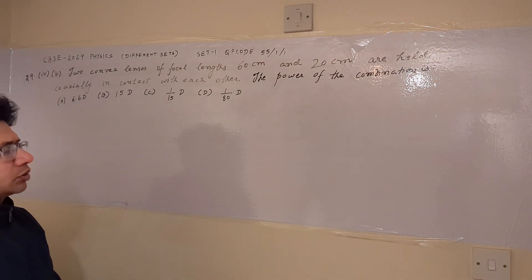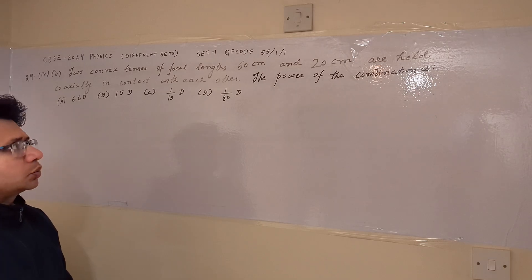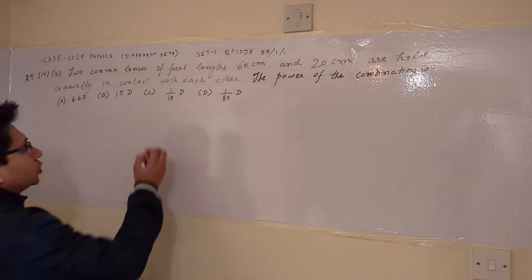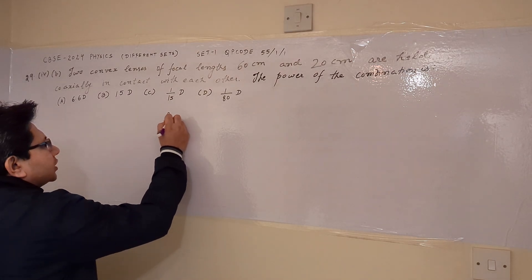So this particular problem is based on the relationship between the focal length and power and the total power when the lenses are kept in combination. First of all, we have to find out the combination's power. There are two convex lenses and the focal lengths are given, so from this value we can calculate the respective powers.